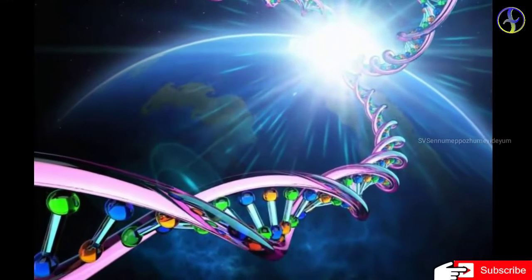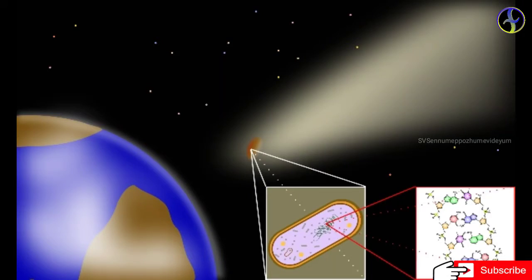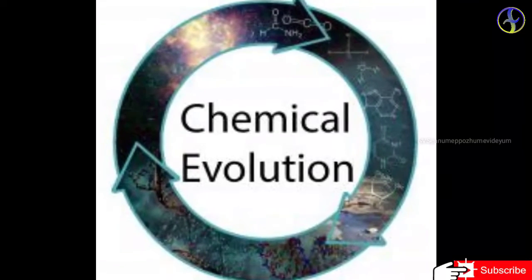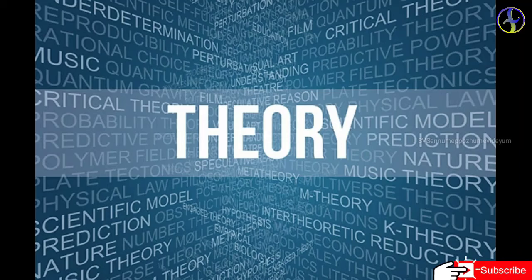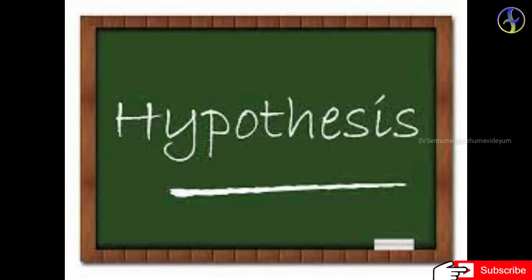There are two theories about the origin of life: chemical evolution and panspermia. Chemical evolution is not just a theory, but there is one hypothesis called panspermia.